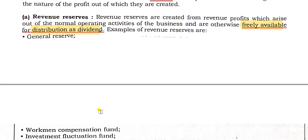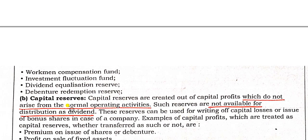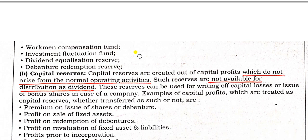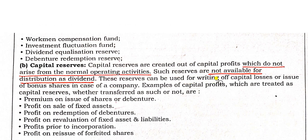Which of the following is available for distribution as a dividend? Revenue Reserve. Which of the following is not available for distribution as a dividend? Capital Reserve. Capital Reserve is used for writing off capital losses or issue of bonus shares in the case of a company.